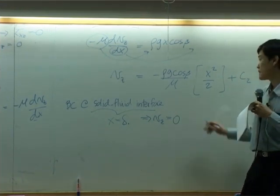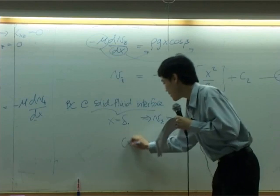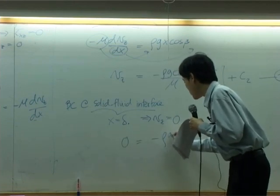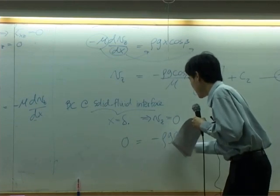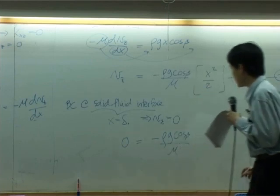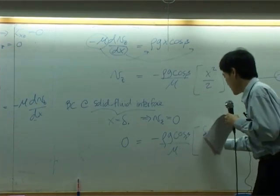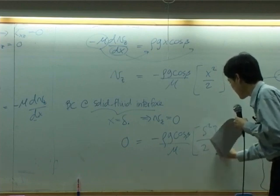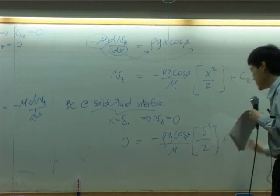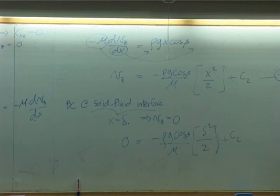So apply that, you get zero equal to minus rho g cosine beta divided by mu, delta squared over 2, plus c2. So you will get c2 equal to rho g delta squared, cosine beta over 2 mu.